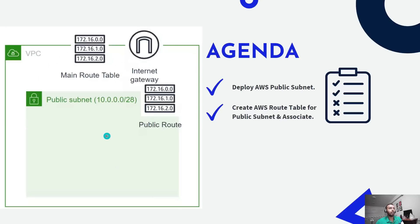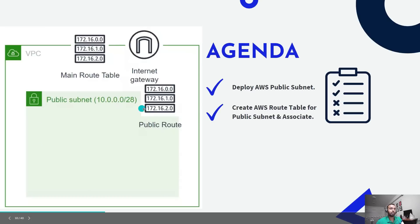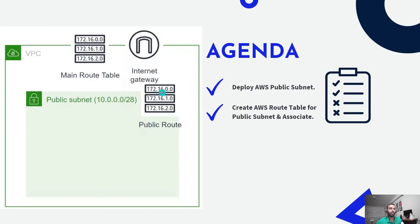In part one of the video, we created a VPC. When you create a VPC in AWS, it automatically creates a main route table. When you create an internet gateway, your route table entry needs to be part of that main route table for the internet connection to be available for the VPC. In part two, we'll create a public subnet in that same VPC, create a custom route table named 'public route', add route table entries, and associate the public route table to our public subnet.